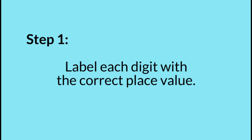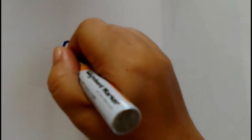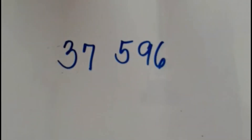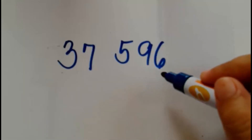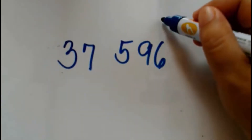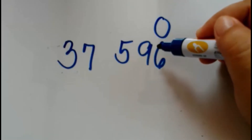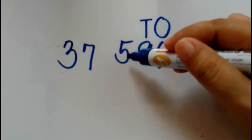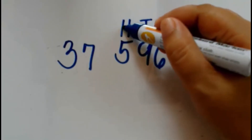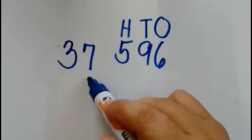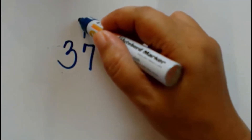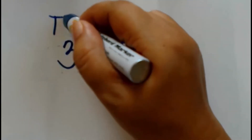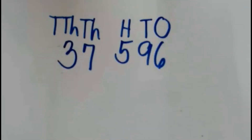We will label each digit of the number 37,596 with the correct place value. 6 is in the ones place, so O stands for ones. 9 is in the tens place, so T stands for tens. 5 is in the hundreds place, so H stands for hundreds. 7 is in the thousands place, so TH stands for thousands. And 3 is in the ten thousands place, so TTH stands for ten thousands.